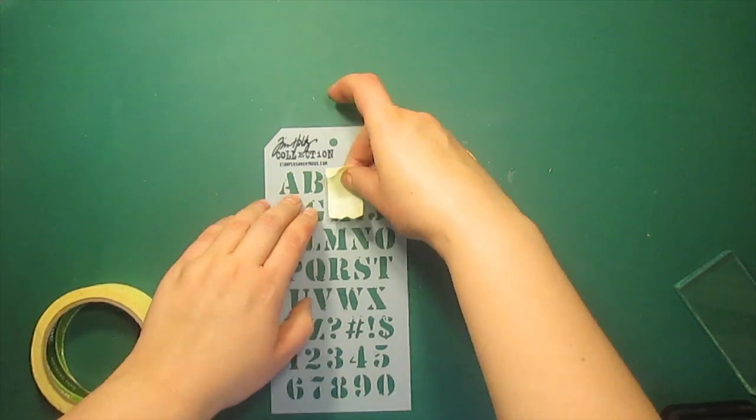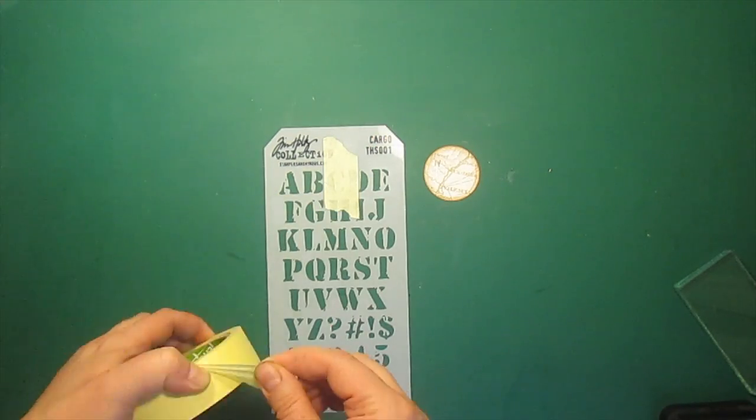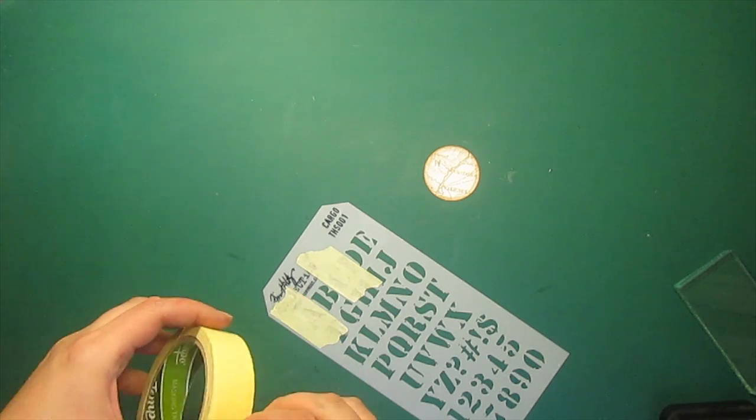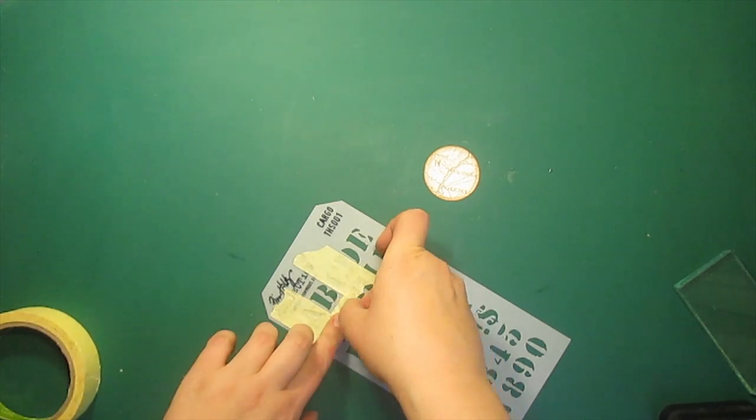For the lettering I'll be using this alphabet stencil. I'm masking the areas around the letter with painter's tape.